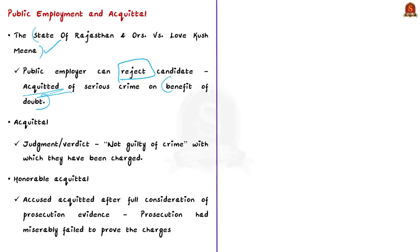Acquittal means freeing someone from a criminal charge by a verdict of not guilty. In this case, the person in question was acquitted of murder in Rajasthan in 2009 after a witness turned hostile. He was accused of being part of a group that ran a tractor over a woman and stabbed people who tried to resist. He was acquitted based on the benefit of doubt. In this case, two types of acquittal come into play: honorable acquittal and acquittal based on benefit of the doubt.